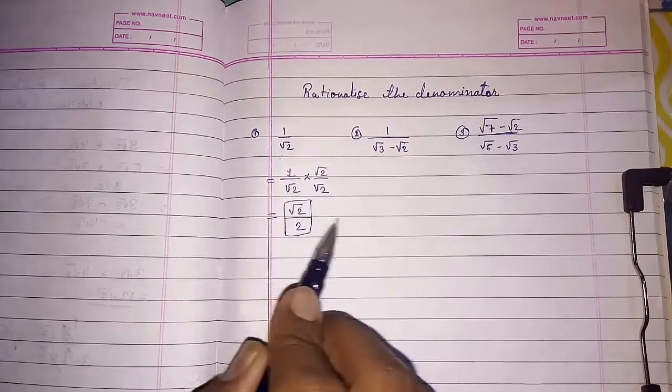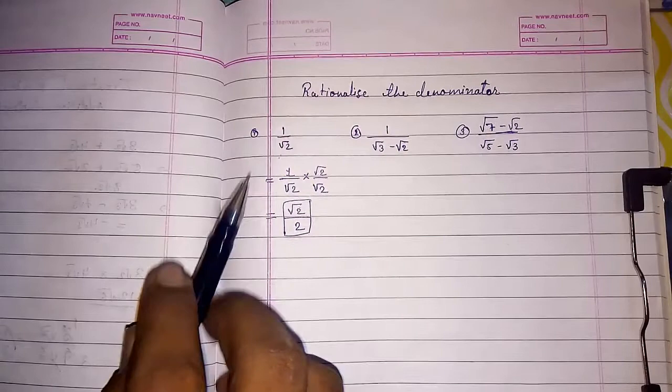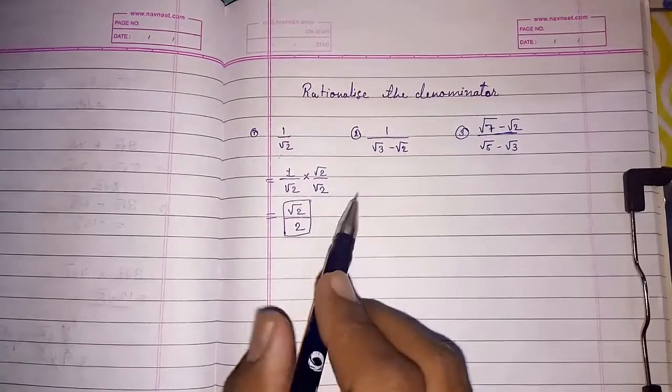It is in numerator and we don't have any problem. Nobody has problem. But, when it is in denominator, we have to remove it. Now, we are going to solve this.